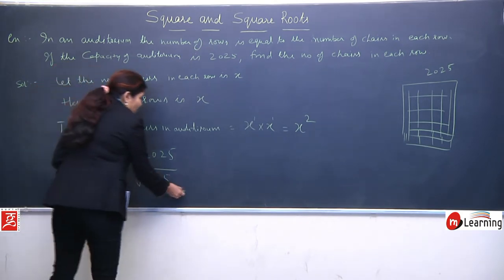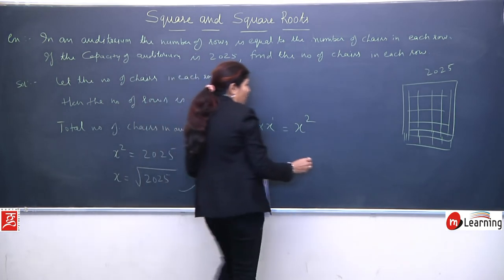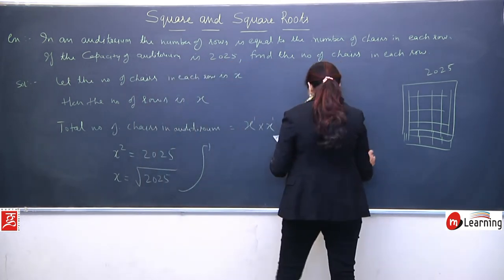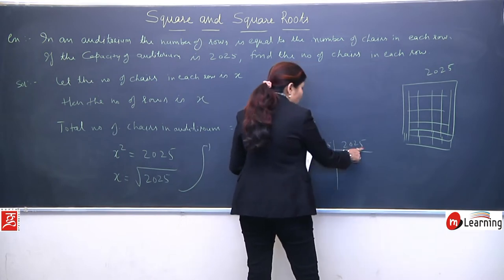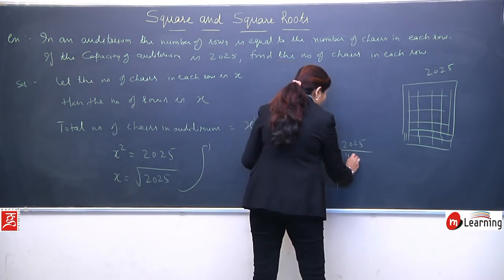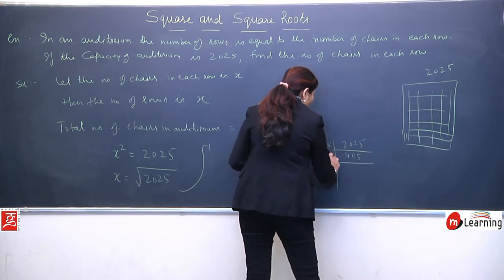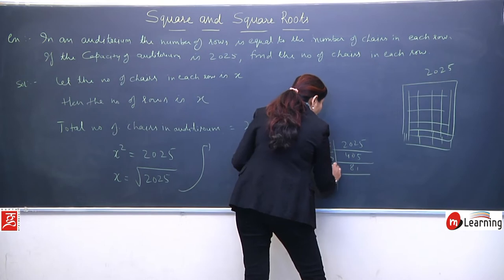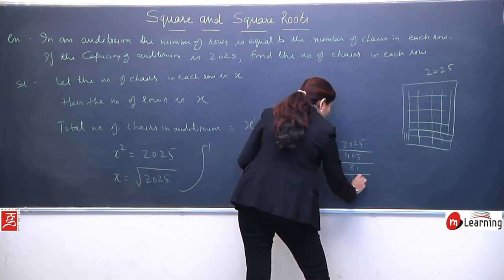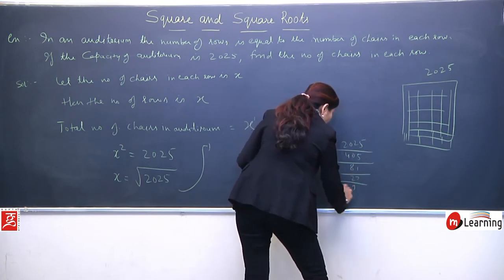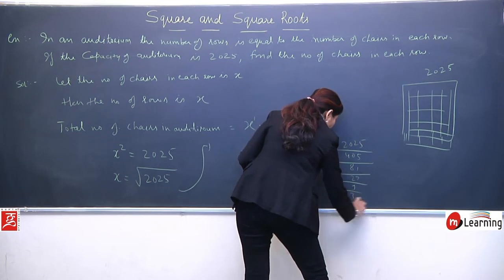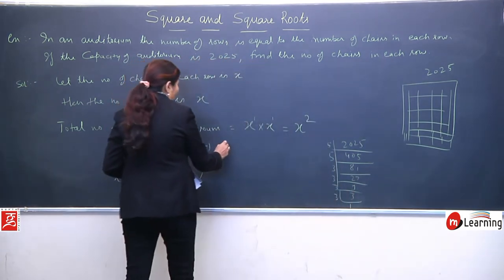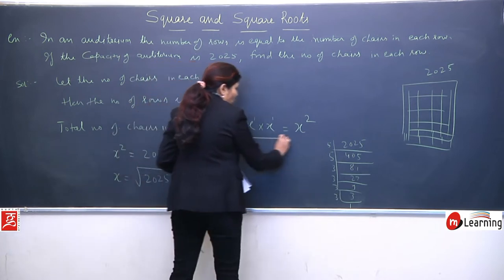So x equals square root of 2025. Now there's square root, so to calculate it we'll apply prime factorization. When we do prime factorization, divide by 5 because last digit is 5. So it becomes 405, then divide by 5, 5 eights are 40, 1 will go. This will go by 3, 27, 3 nines, 3 threes, and finally 3 ones.